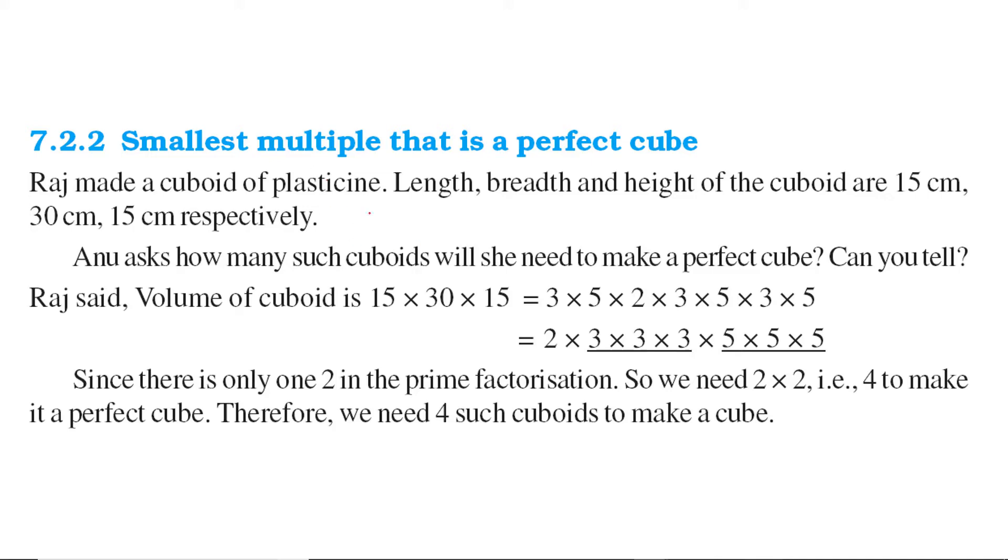Smallest multiple that is a perfect cube. So let us take an example. Now Raj made a cuboid of plasticine.